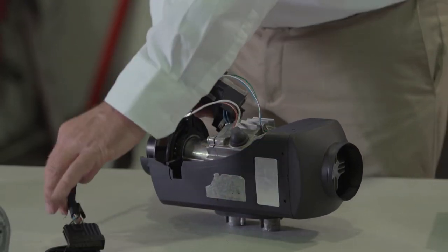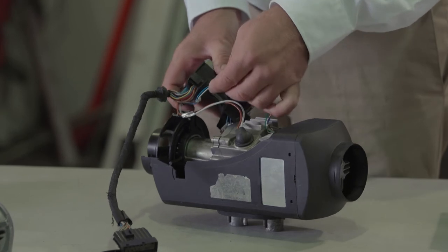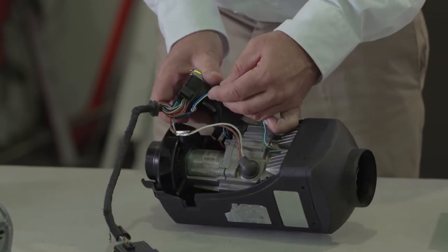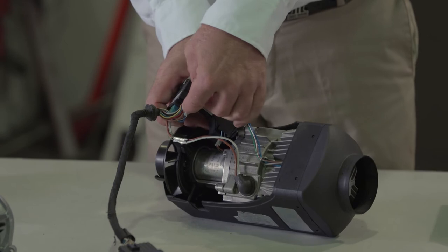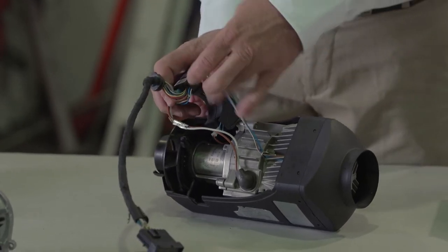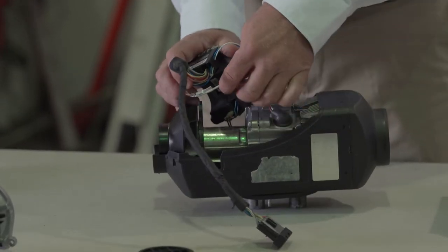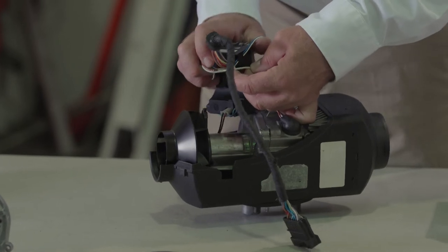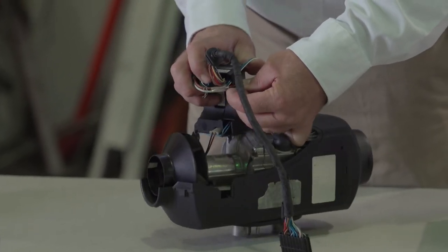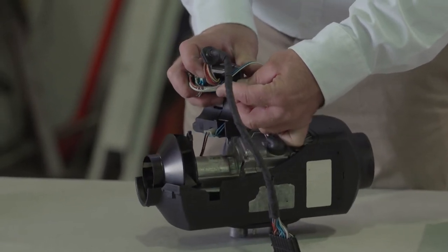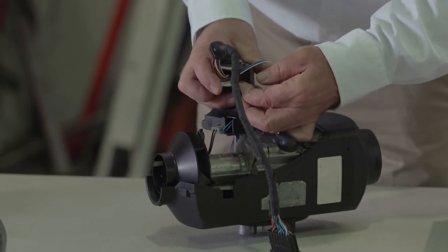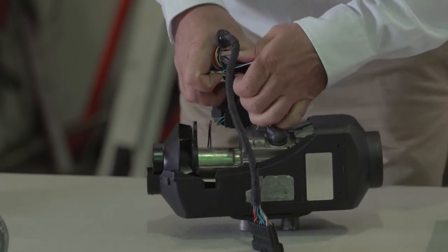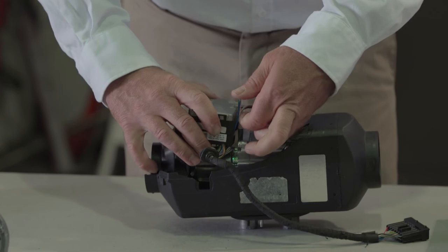The ECU harness is laying over the wires for the components. There's a tab on the backside for the wires to be held back by. This will help hold the wires out of the way as you place the ECU back down into the heater.